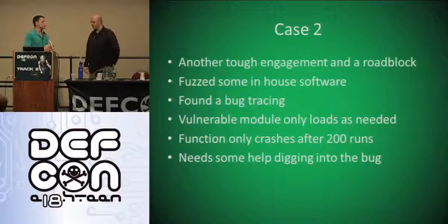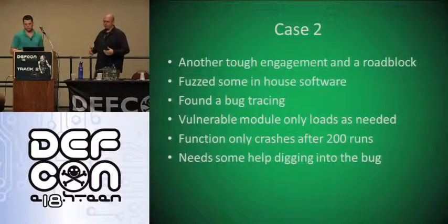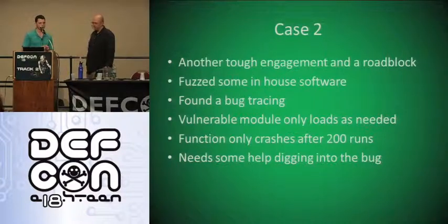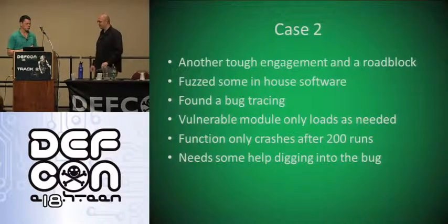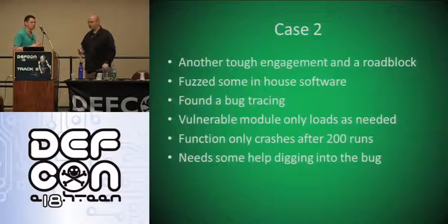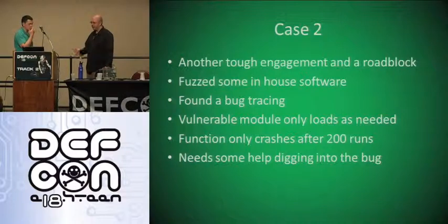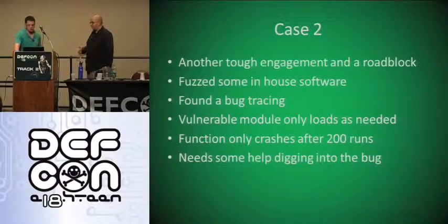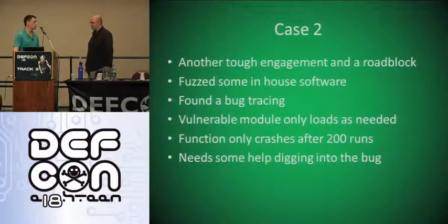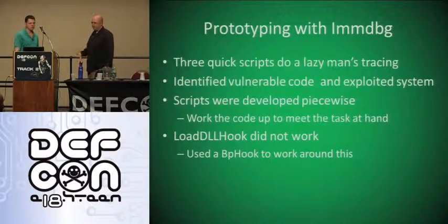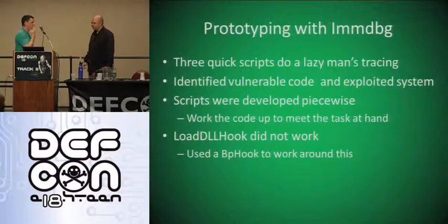Moving to the second case study — this goes back to pen testing. You'll get a tough engagement where they've patched everything right before the pen testers come in, set ground rules, no zero days. So I look for custom software they wrote in-house or from a small vendor, reverse it, and find an exploit in a short time. For small applications this is easy. I like to focus on things that load in the browser, but modules are loaded as needed and you can run through hundreds of iterations — manually debugging would take far too much time. So I created add-ons to Immunity Debugger, which is basically OllyDbg with Python built in.